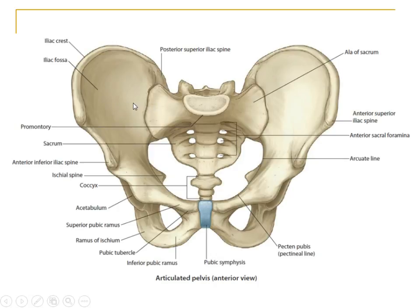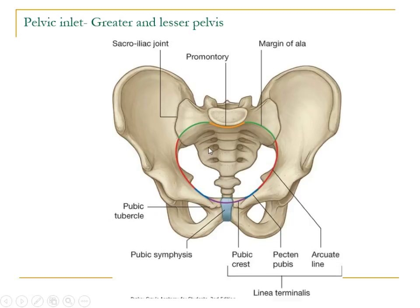The bony pelvis is formed by four different bones which articulate with one another through different joints. The two hip bones on either side articulate anteriorly at the pubic symphysis and posteriorly the sacrum articulates with the hip bone at the sacroiliac joint, and the sacrum articulates with the coccyx inferiorly at the sacrococcygeal joint. This articulation can be divided into the greater pelvis and the lesser pelvis through the pelvic brim, which is also known as the pelvic inlet.